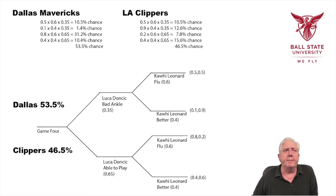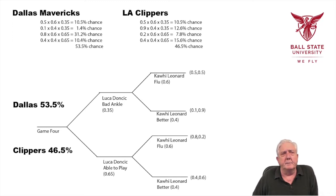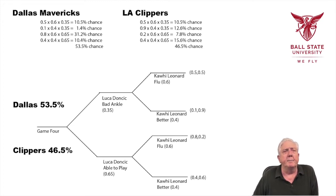Let's look at how we calculate the overall probabilities. Taking the top path: 0.5 for Dallas times 0.6 for Kawhi times 0.35 for Luka gives a 10.5% chance. If Kawhi is better: 0.1 times 0.4 times 0.35 gives a 1.4% chance of Dallas winning. If Kawhi has the flu and Luka plays: 0.8 times 0.6 times 0.65 gives a 31.2% chance. Finally, 0.4 times 0.4 times 0.65 gives a 10.4% chance — the total being a 53.5% chance of Dallas winning.